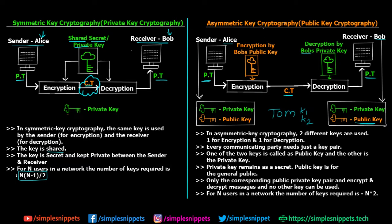This is asymmetric key cryptography, also known as public key cryptography. In asymmetric cryptography, two different keys are used — private key and public key — one for encryption and another for decryption. Every communicating party needs just a key pair: Alice needs only her own private and public key, and Bob needs only his own private and public key. They do not need to maintain large numbers of keys like in symmetric key cryptography. Only the corresponding public and private key pair can be used to encrypt and decrypt messages.